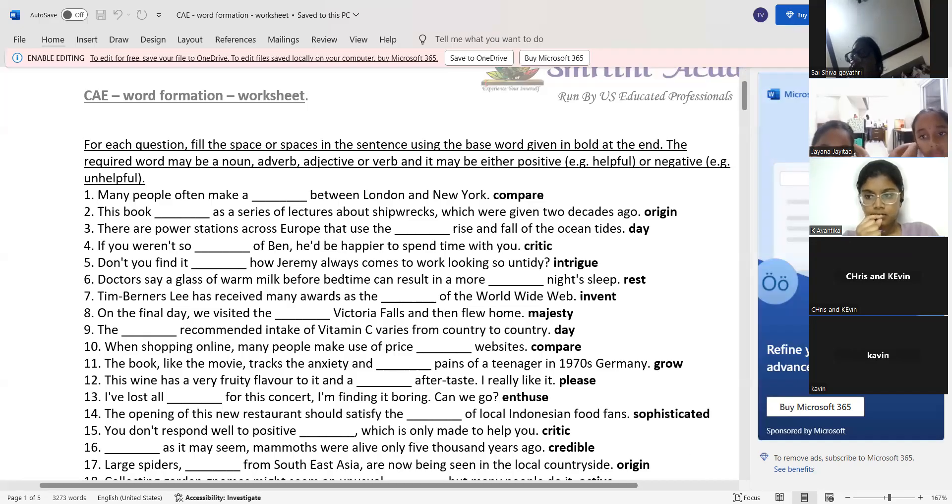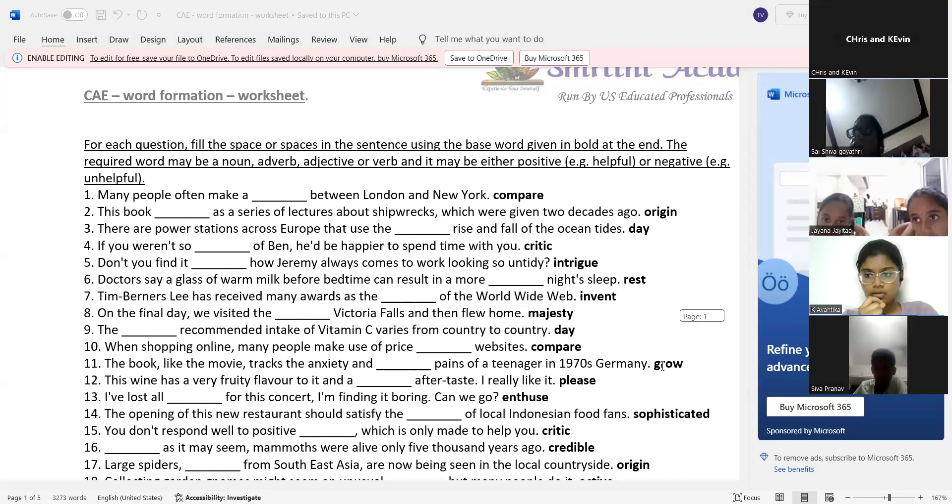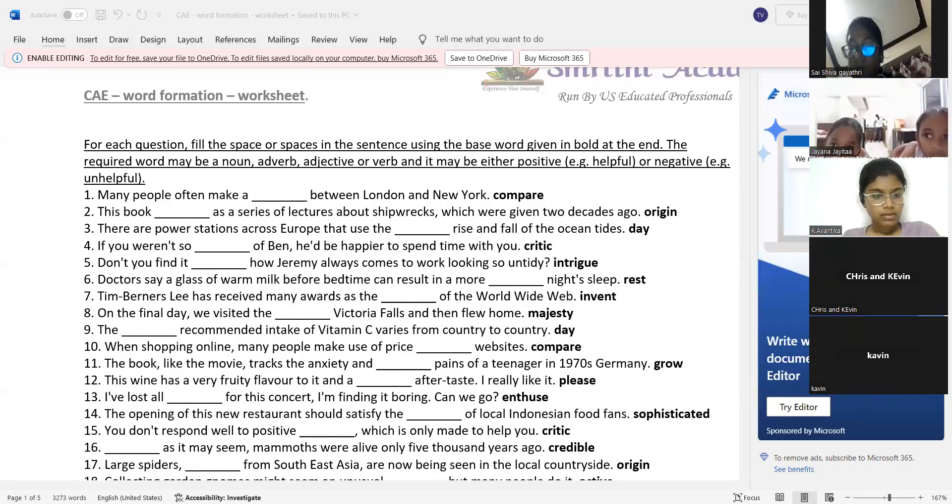Don't you find it intriguing how Jeremy, Jeremy always comes to work. Super, super, super. Do you find it strange how Jeremy always comes to work looking so untidy. Intriguing is very good. I-N-T-R-I-G-U-I-N-G. Superb answer. Size of a guy three. Six. Doctor says a glass of warm milk before bedtime can result in a more dash night sleep. No. It talks about the quality of night sleep. Night sleep is a calm bone noun. You have to, you have to simply go with an adjective to fix it up. Sorry, that's not that hard. You can make it. No. No. No. No. No. No. Restful. Superb, restful. I-I-I-you got it. Good that you were able to take some time and do this. Very good. Superb. So, what's. Restful.